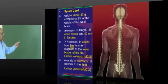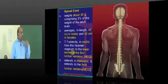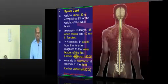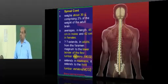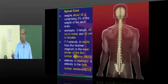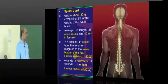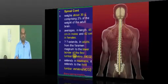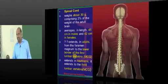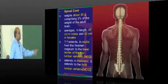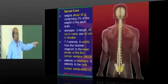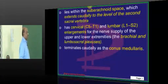The spinal cord typically extends in adults all the way from the foramen magnum up to the lower border of the first lumbar vertebra. In the case of neonates, it extends until the third lumbar vertebra L3, whereas in adults it extends up to the lower border of the first lumbar vertebra — this is what I want to underscore to all of you.